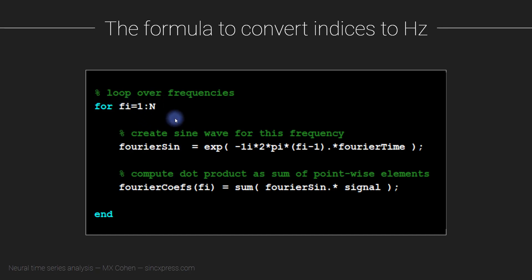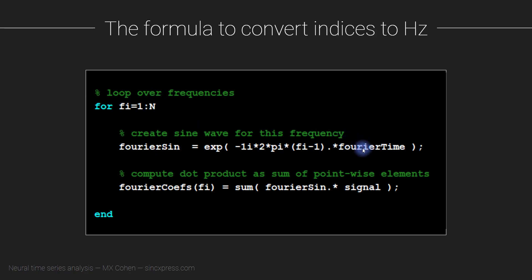The Fourier transform implemented as a loop in MATLAB code looks something like this. We are looping over N frequencies, where N also corresponds to the number of time points. So the number of time points in the signal defines the number of frequencies or the frequency resolution we can extract from that signal. Inside this loop, we create a complex-valued sine wave: e to the i·2π·f·t, where t is a normalized time vector that goes from zero to one in N steps.